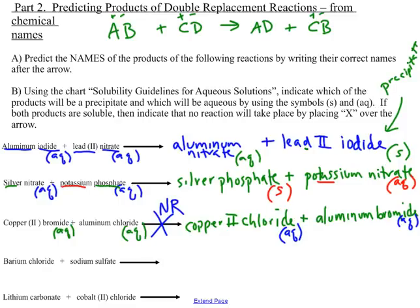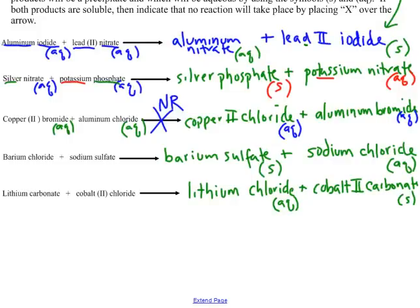Pause the video to try the fourth and fifth examples. When you come back, the answers will be on the screen. Both reactions will produce a precipitate — barium sulfate in the fourth example, and cobalt-2 carbonate in the fifth example.